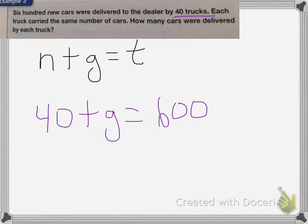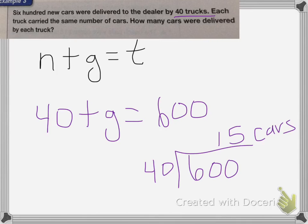With this one, again, I'm going to divide 600 divided by 40 to figure out how many cars each truck is carrying. My answer is 15. So 15 cars are carried on each truck.